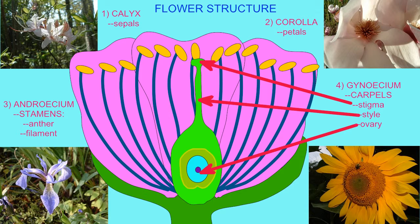Inside the ovule, the megaspore mother cell undergoes meiosis to produce seven cells with eight nuclei. This is the female gametophyte, which includes the egg.